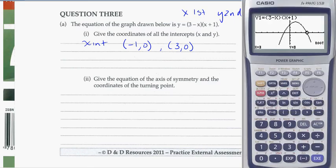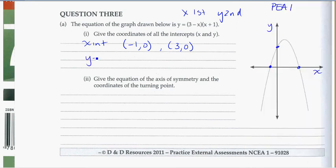Then we want to find the y-intercept as well. Go back to G-solve and we can see y-intercept right there. Click on that and there's just one of them. We see it's at 0 and 3, so our point is going to be (0, 3). The y-intercept is at (0, 3).